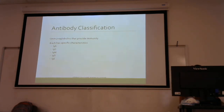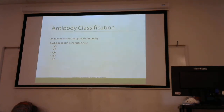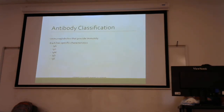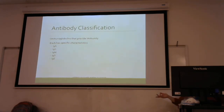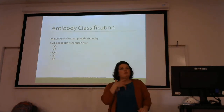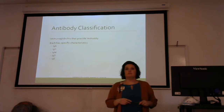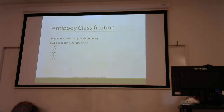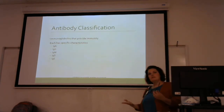Your IgG actually crosses the placenta and provides the newborn with passive acquired immunity. Your IgM is primarily responsible for the initial immune response. IgD acts as a helper — it helps your B cells differentiate between different types. Your IgE is found in plasma and interstitial fluids and causes the symptoms of an allergic reaction.